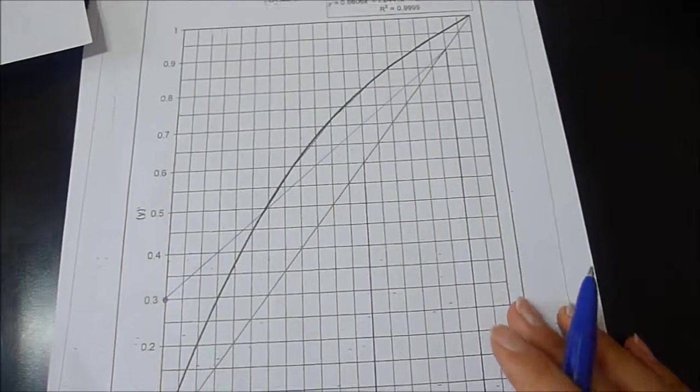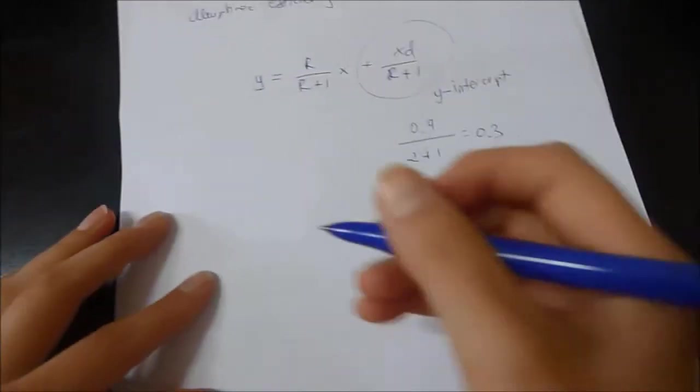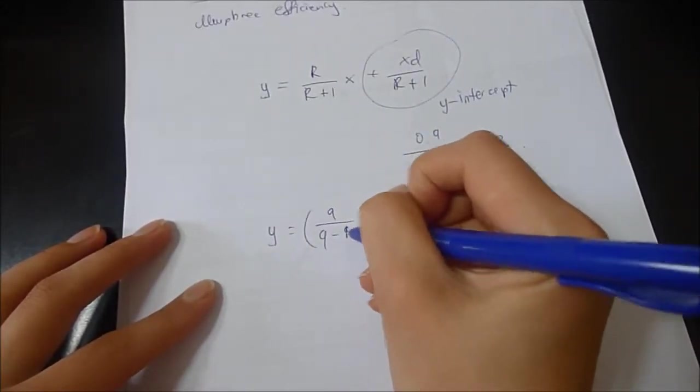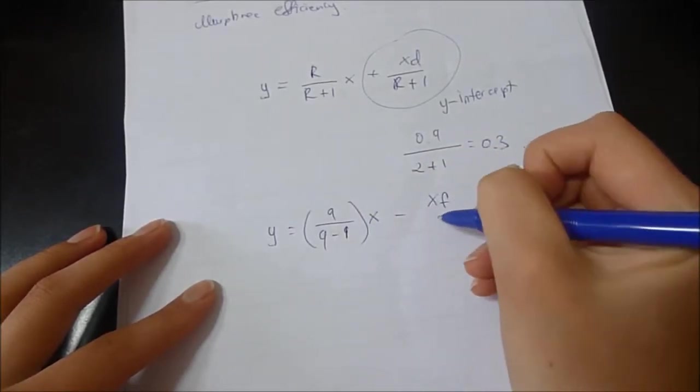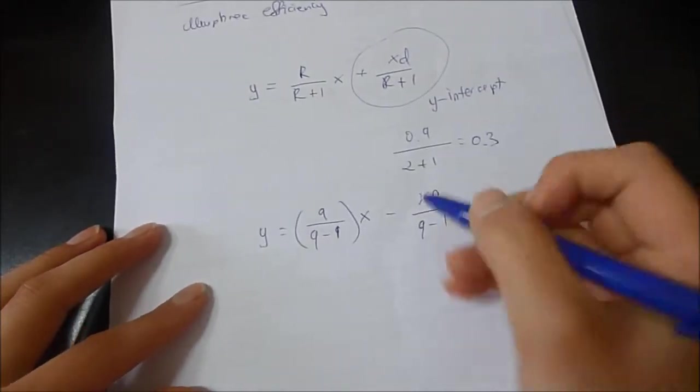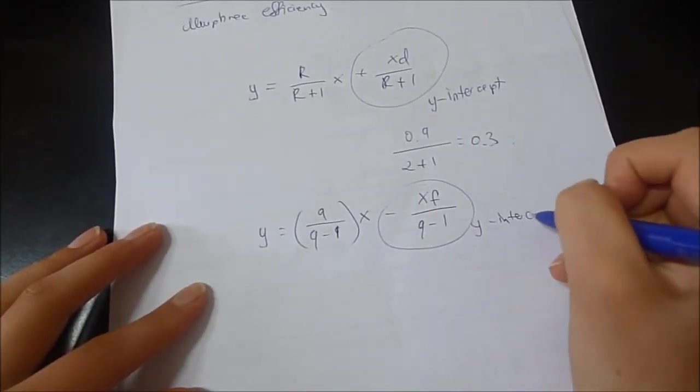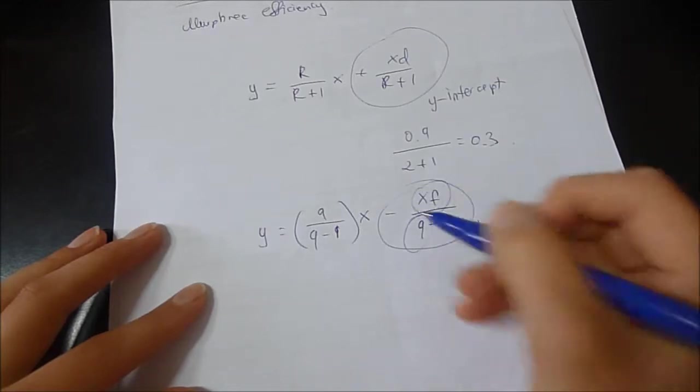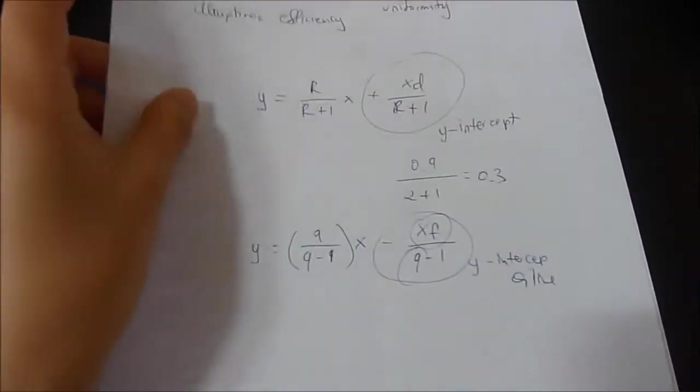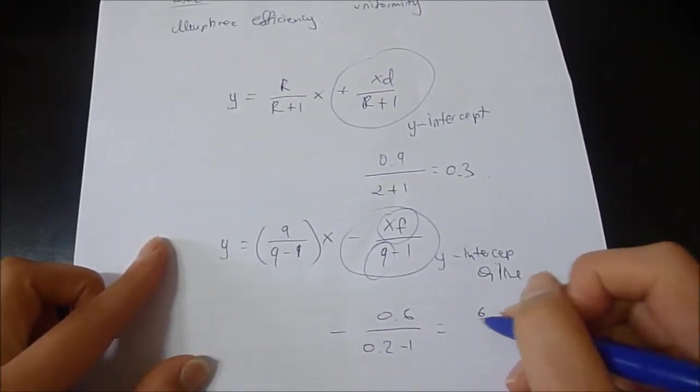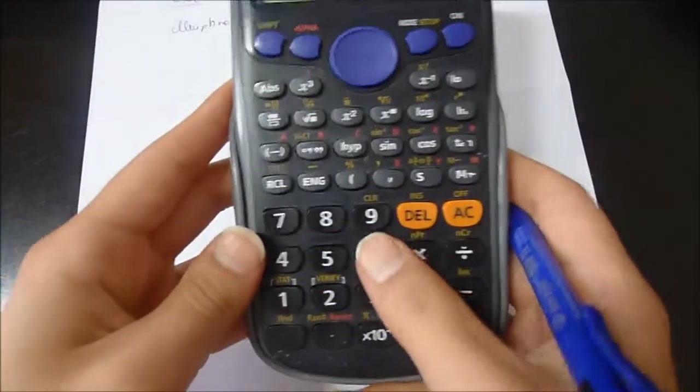Now let's find the Q line. Q line equation is Y equals Q over Q minus 1 times X minus XF over Q minus 1. This is our Y intercept for Q line. Q is given as 0.2, XF is also given as 0.6.